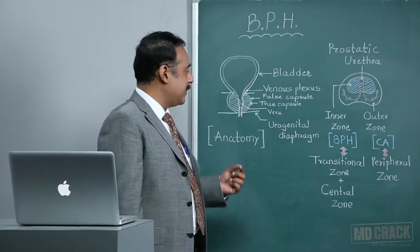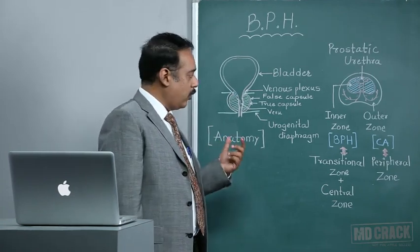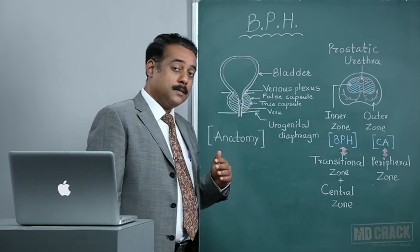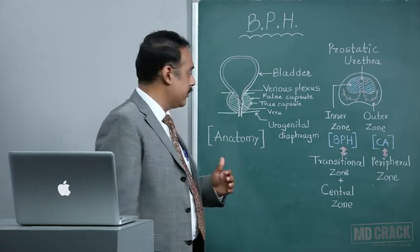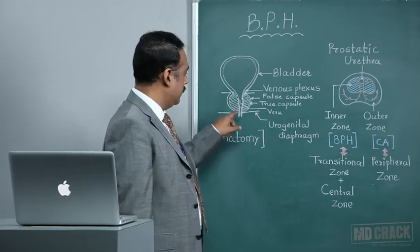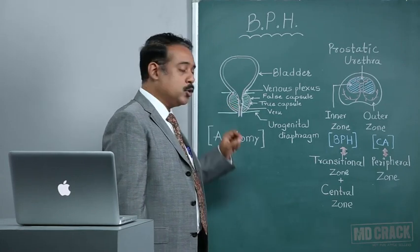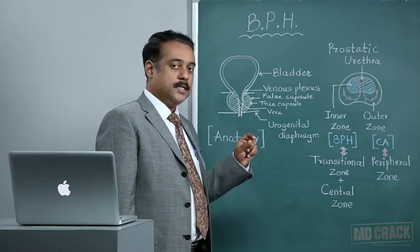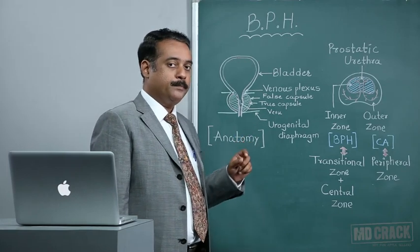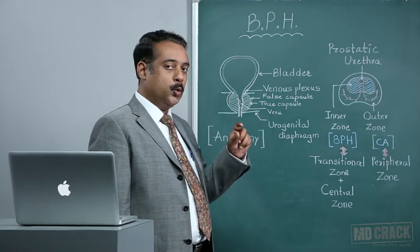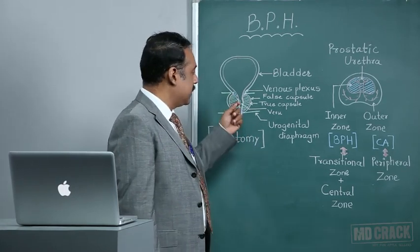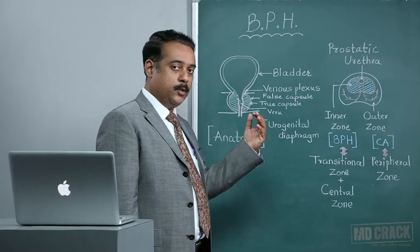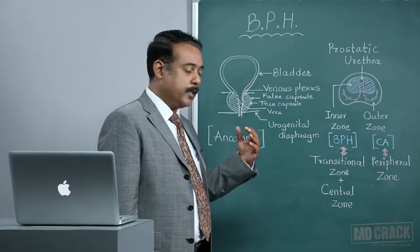All these aspects are very important for better understanding during the surgical removal of this gland. There is a zone in the prostatic urethra called the verumontanum, which is a zone from where secretions from the seminal vesicles collect into the prostatic urethra.